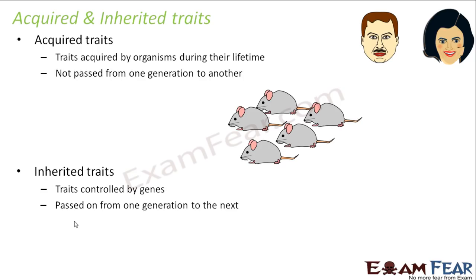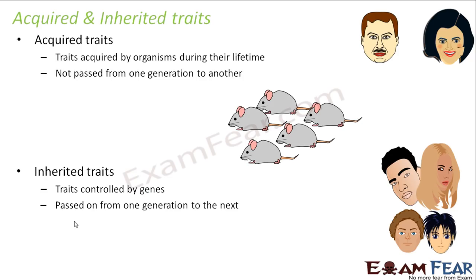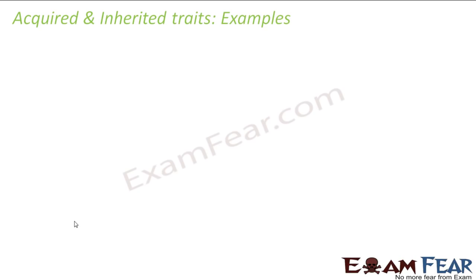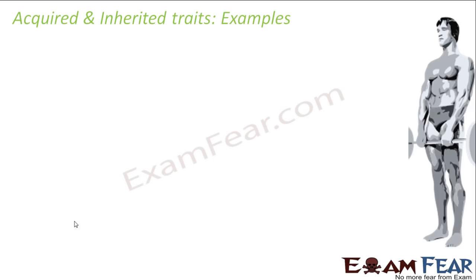In contrast, inherited traits are controlled by genes in the germ cells — the sex cells — and are passed on from one generation to the next. These are the traits we were discussing while talking about heredity, such as eye color and natural hair color. Acquired traits have nothing to do with genes. Let us look at some examples comparing the two.